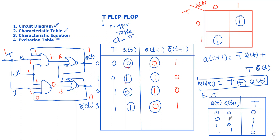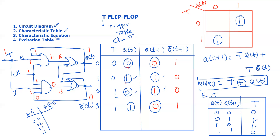Observing the excitation table, the T input pattern matches the XOR gate truth table. For inputs A and B: 0,0→0; 0,1→1; 1,0→1; 1,1→0. This is the same operation as XOR, confirming that Q(t+1) = T ⊕ Q(t).